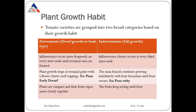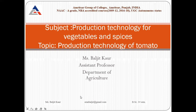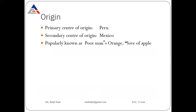An example of indeterminate type is Pusa Ruby. Plants of determinate type are compact and their fruits ripen more closely together. In indeterminate, the flowers keep setting until frost, so as their growth continues and stops only at frost period, fruit setting similarly keeps on and stops only when there is frost.